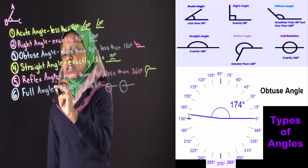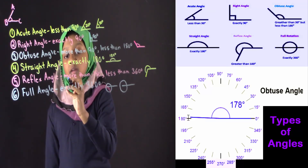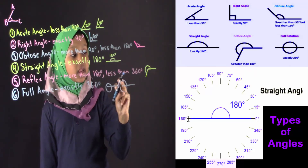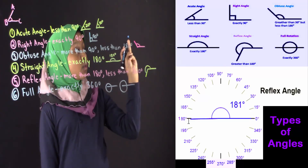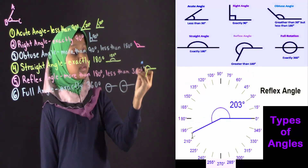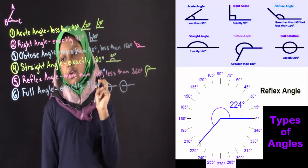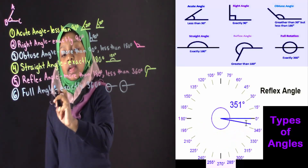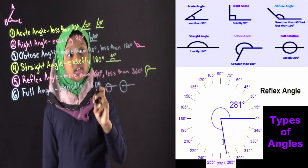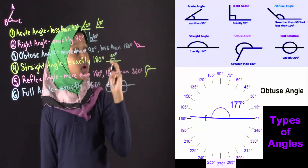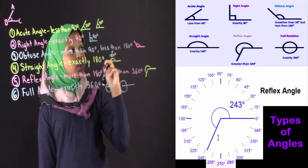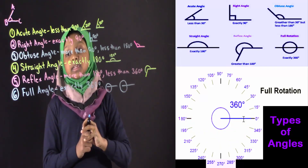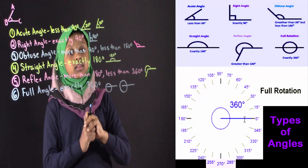Then for number five, it's reflex angle. The meaning of reflex angle is it's more than 180 degrees and less than 360 degrees — we see different types of reflex angles in our visual figure. Then we have our last one, full angle. Full angle is exactly 360 degrees — it's a circle. In our visual figure, we see the full angle. I discussed about angles and different types of angles. Thanks for watching this class.